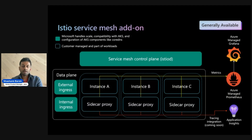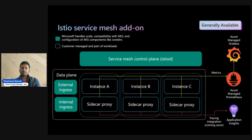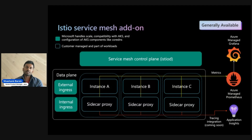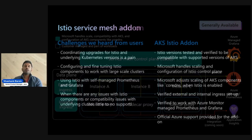In terms of the broader ecosystem — you can have managed Prometheus enabled for the cluster so that metrics generated during service communication can be ingested into Azure Managed Prometheus. You can then set up a linkage between Azure Managed Grafana and Azure Managed Prometheus and build out your dashboards. For tracing, we are actively working on making the integration with Application Insights smooth so that traces generated on the cluster can be easily ingested into Application Insights.